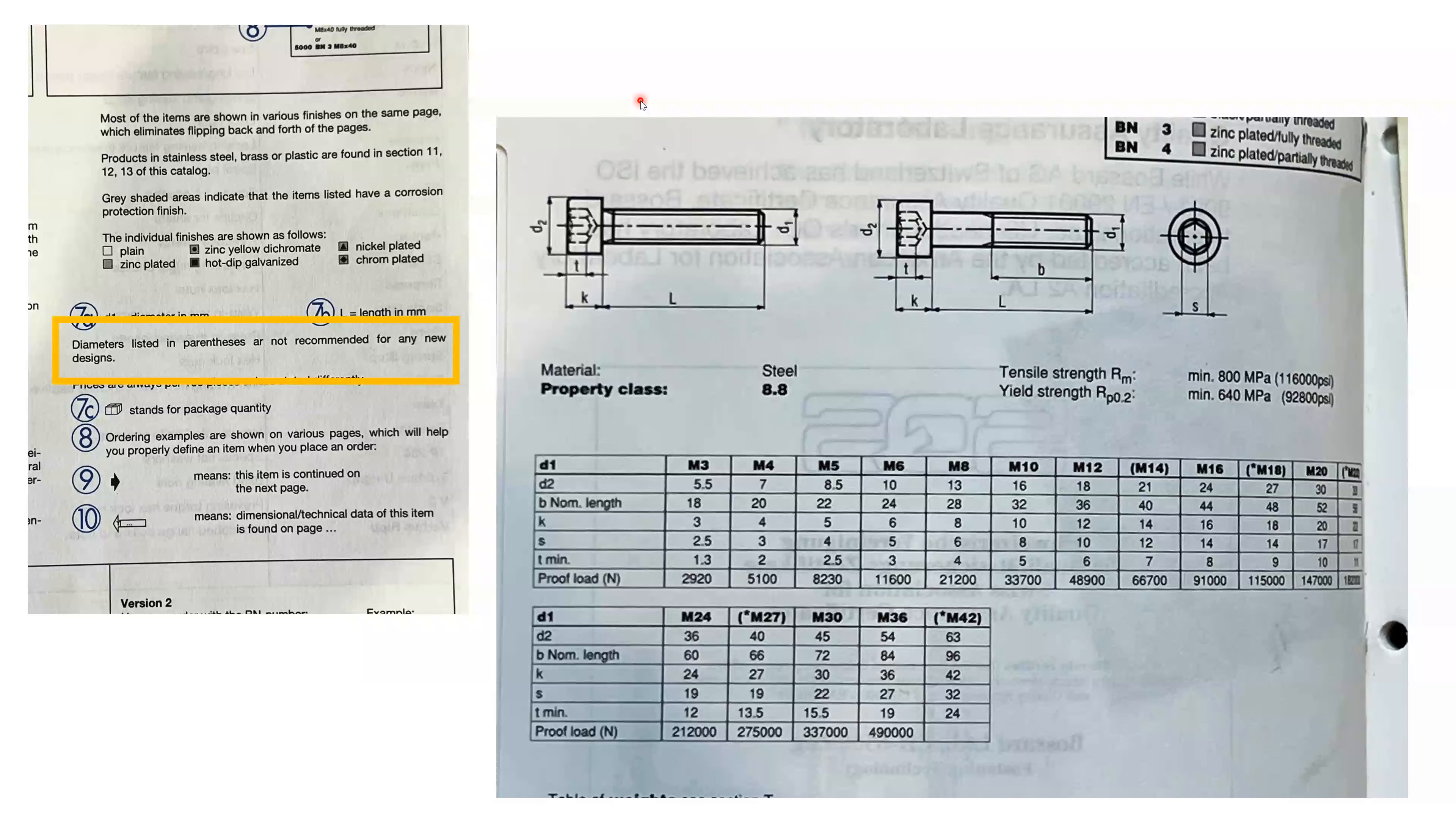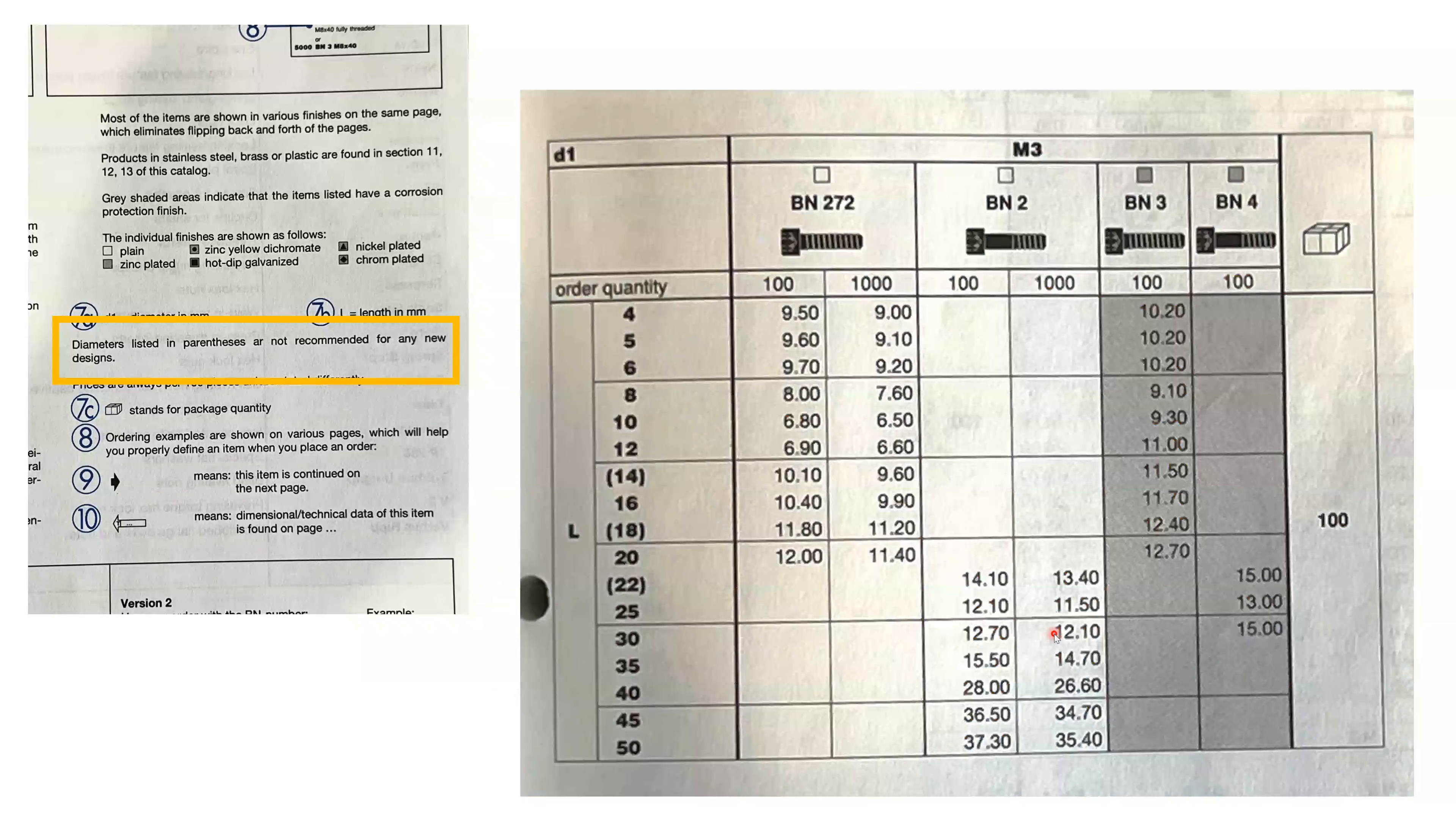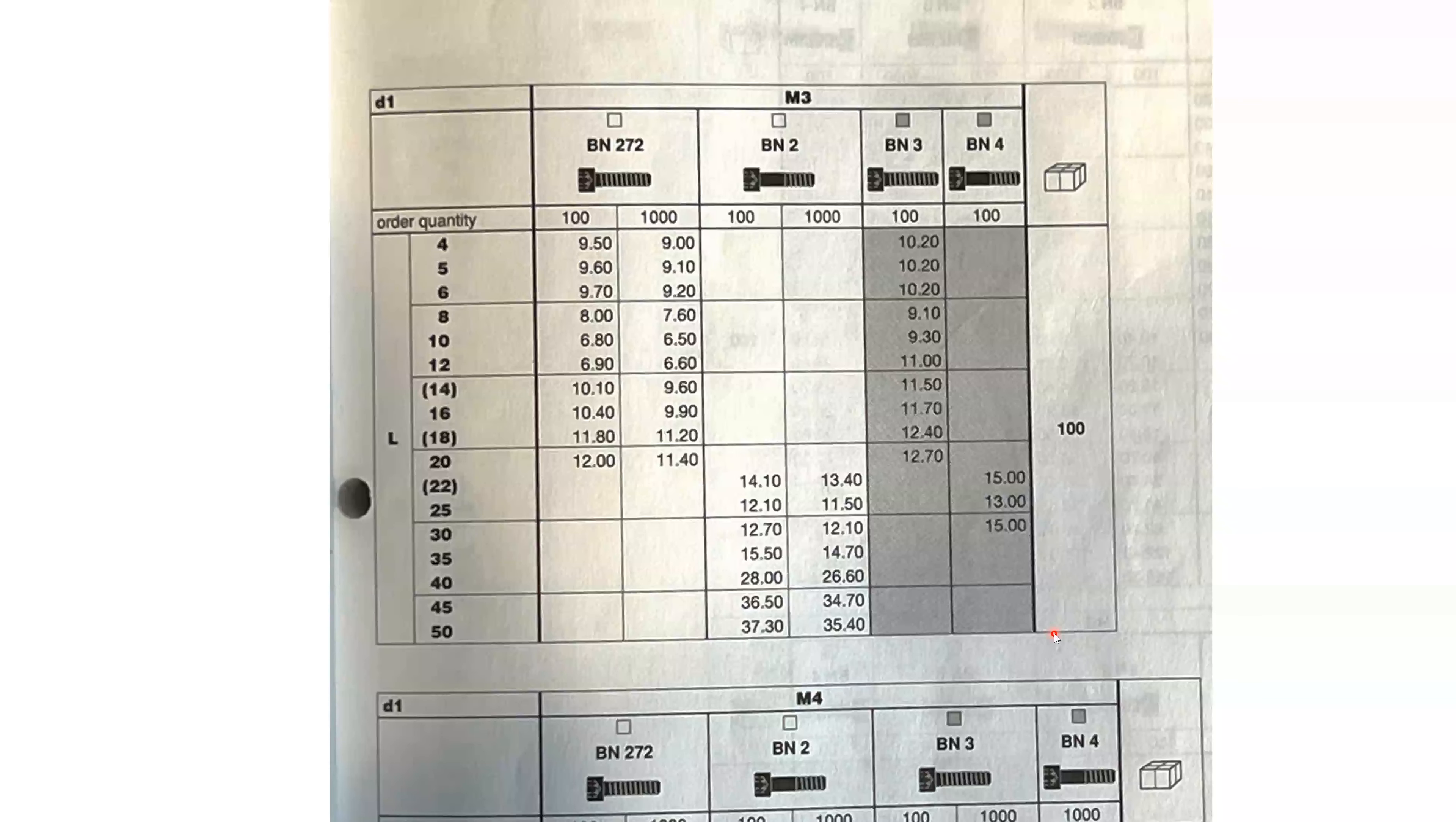One thing that's interesting is if you're a designer making a new product, there are certain sizes that are not recommended for new designs. This was an effort a long time ago by the fastener industry to try to reduce the total number of bolts in the world. So you'll see that 14, 16, 22, 27 to 42, if you're doing a new design, they prefer that you don't use these bolt diameters. They're trying to phase them out at some point. I don't know how successful they're going to be, but they're also trying to phase out these lengths: 14, 18 and 22. What's interesting though is over time, the available bolt options have actually increased. You can now get a 3 as well as a 28 and all the way up to 70 in length for M3 fasteners.